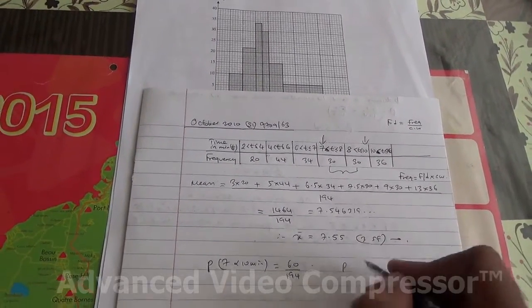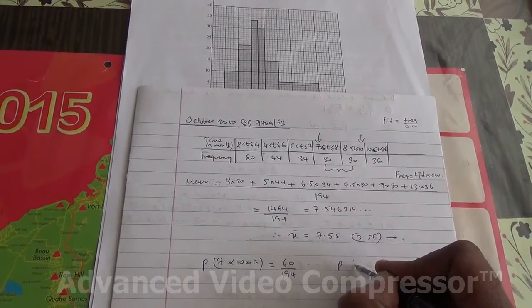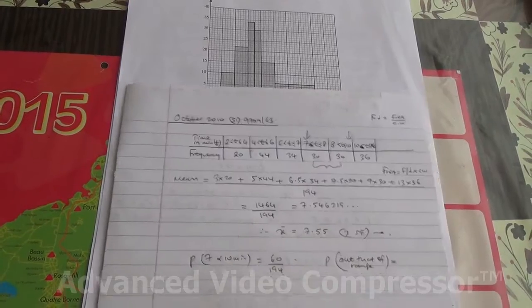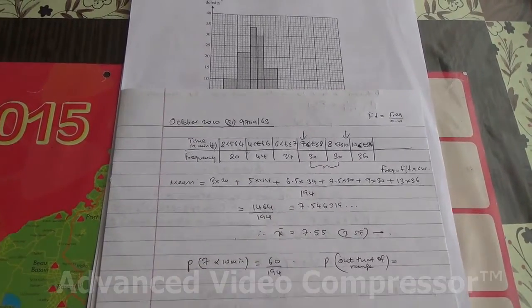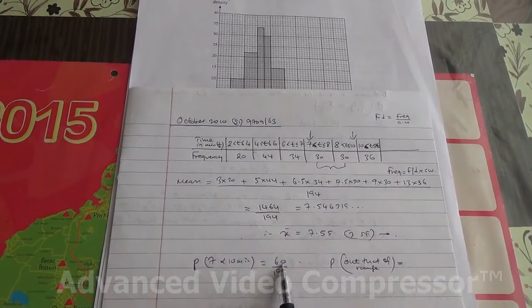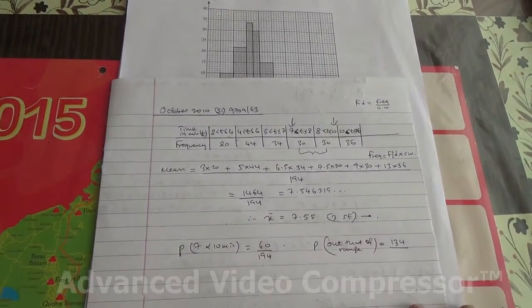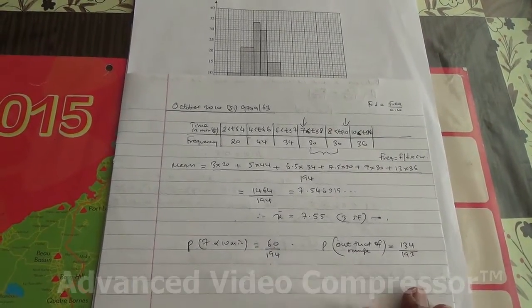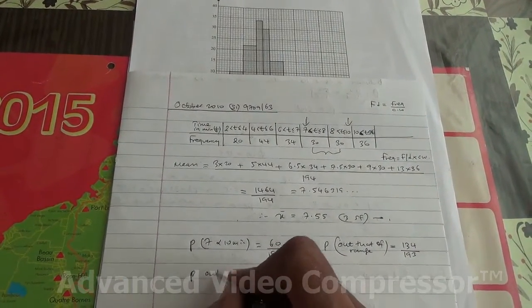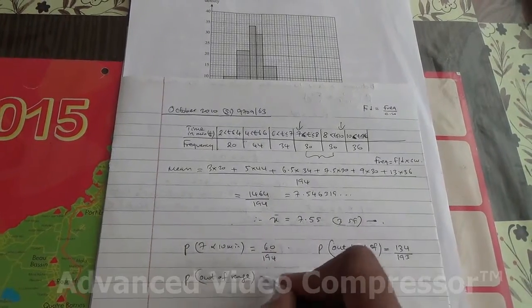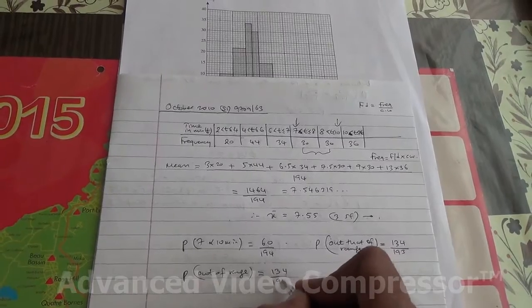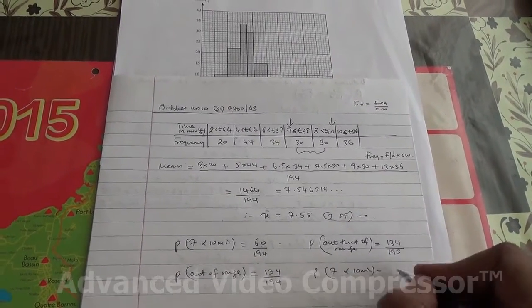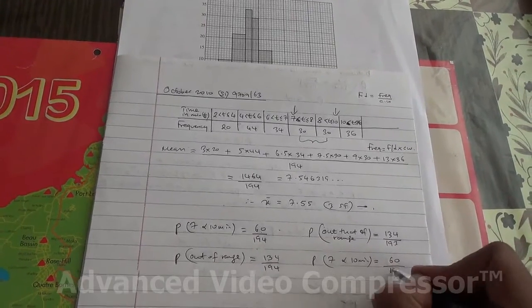And then the second one is taking outside that range. So 194 students in total minus the 60, that's 134. He's going to be amongst the 134 over a total of 193 because one was taken. Now this could be the other way round. The first student taken was out of that range, 134 over 194 students. And the second one took between 7 and 10 minutes. So he's amongst the 60 students, but this time over 193.